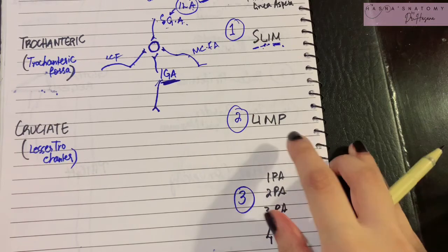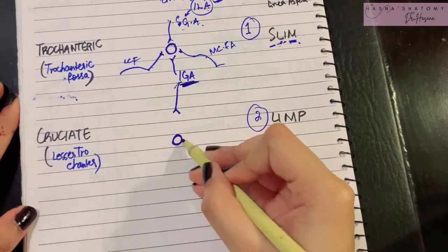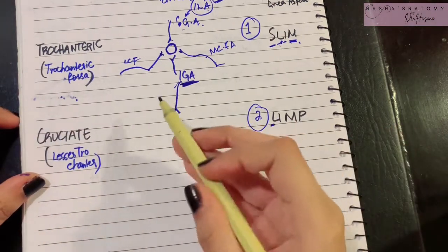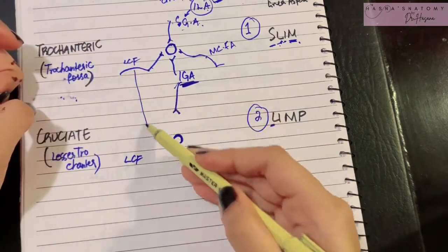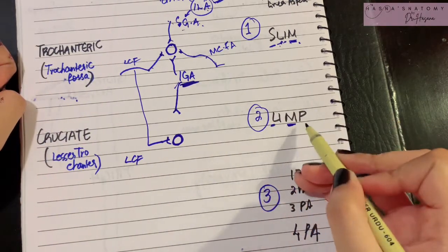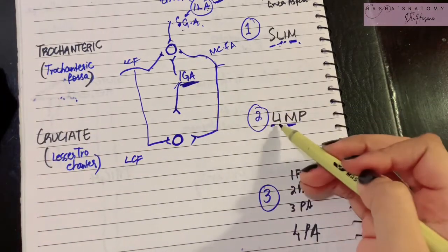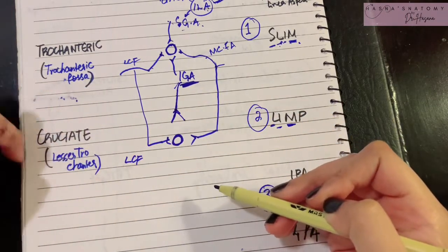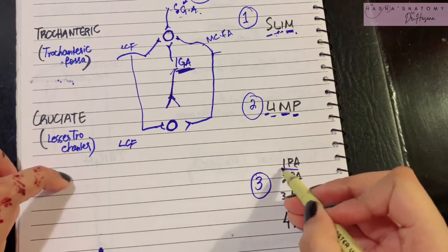The cruciate anastomosis occurs mostly at the lesser trochanter and has the mnemonic LIMP. It is supplied by L — the transverse branch of the lateral circumflex femoral artery; and similarly M — the medial circumflex femoral artery also gives a transverse branch to the cruciate anastomosis. From above, I — the inferior gluteal artery gives its anastomotic branch to this cruciate anastomosis.